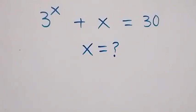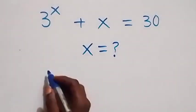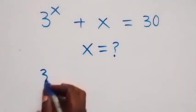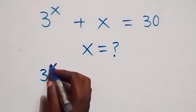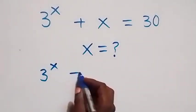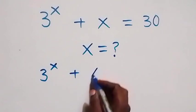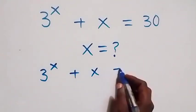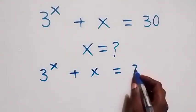Hello and welcome. How to solve for x in this nice exponential equation. What is given is 3 raised to power x plus x equals to 30.